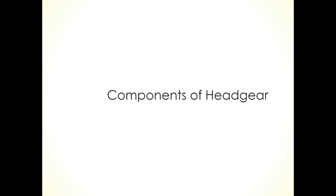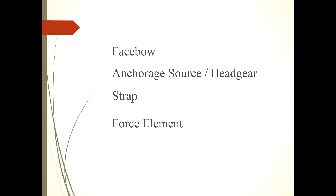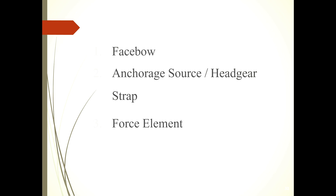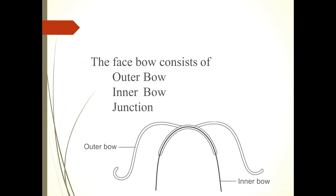Components of headgear: 1. Face bow, 2. Anchorage source/headgear strap, 3. Force element. The face bow is the component that transmits the extra-oral forces onto the posterior teeth. The face bow consists of an outer bow and an inner bow.